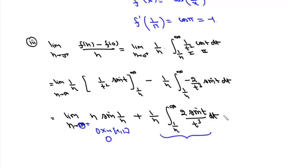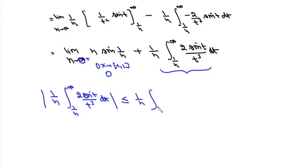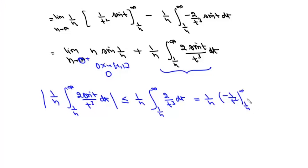We now show the remaining integral also converges to 0. Using absolute convergence: |(1/h) ∫(1/h to ∞) (2 sin(t)/t³) dt| ≤ (1/h) ∫(1/h to ∞) 2/t³ dt = (1/h) · [−1/t²] from 1/h to ∞ = (1/h) · h² = h. As h → 0⁺, this approaches 0, so the entire limit is simply 0.